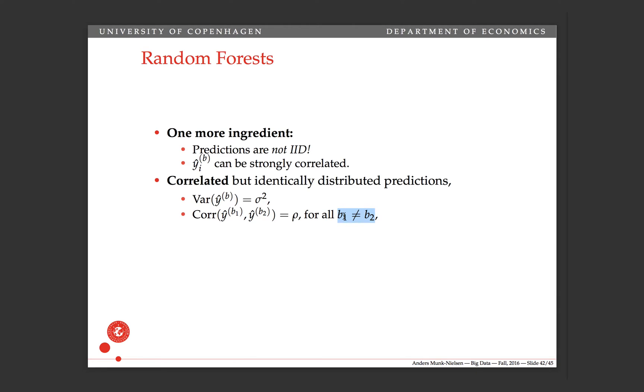Across different bootstrapped samples, the predictors that come out are correlated. And what we're going to show now is that when we increase B, the variance here is going to be bounded by sigma squared rho. But there's a lower bound on the variance.